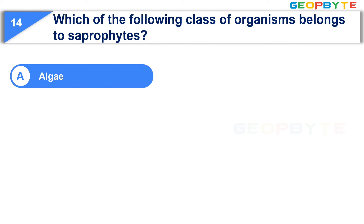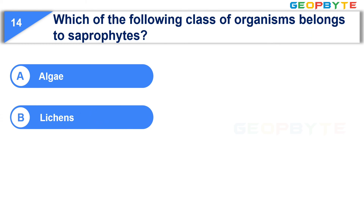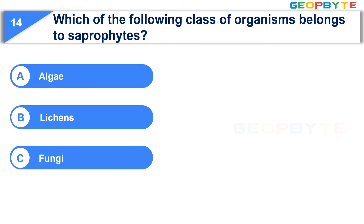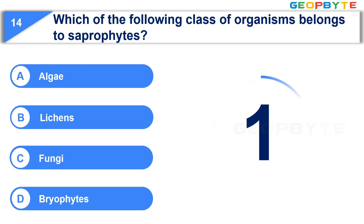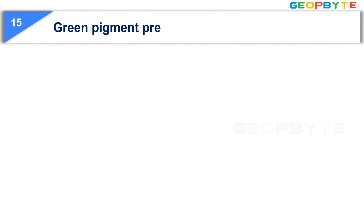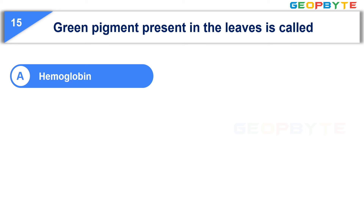Moving to the fourteenth question: Which of the following class of organisms belongs to saprophytes? Option A: Algae. Option B: Lichians. Option C: Fungi. Option D: Bryophytes. Your time starts now. Your time is up and the correct answer is Option C: Fungi.